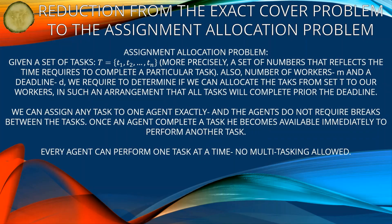Assignment allocation problem: given a set of tasks t = {t1, t2, ..., tn} — more precisely, a set of numbers that reflect the time required to complete each particular task — along with a number of workers m, and a deadline d. We require to determine if we can allocate tasks from set t to our workers such that all tasks complete before the deadline. We can assign any task to one agent exactly, and agents do not require breaks between tasks. Once an agent completes a task, he becomes available immediately to perform another task. Every agent can perform one task at a time — no multitasking allowed.